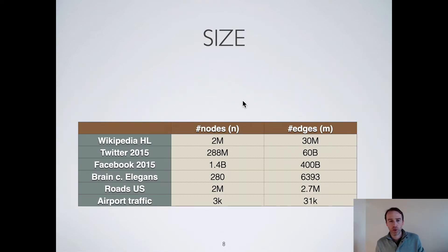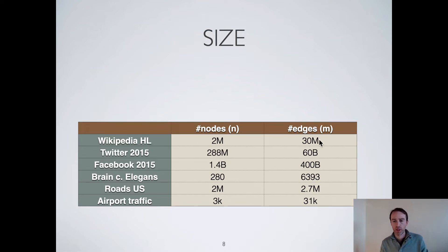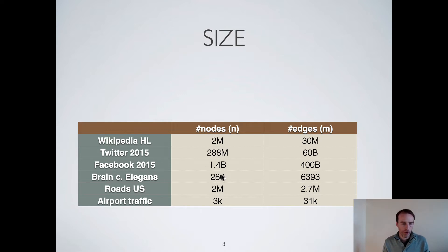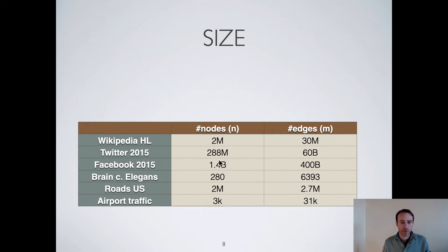Some examples of real-world networks that have been analyzed: a Wikipedia graph with 2 million nodes and 30 million edges; a small but interesting brain network of a worm with 280 nodes and 6,000 edges; and a very large Facebook graph with 1.4 billion nodes and 400 billion edges.